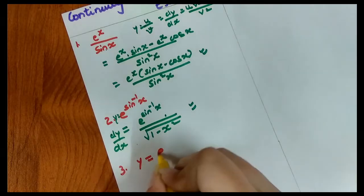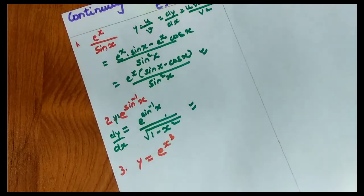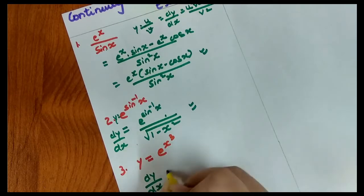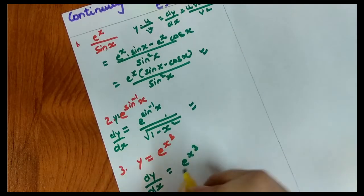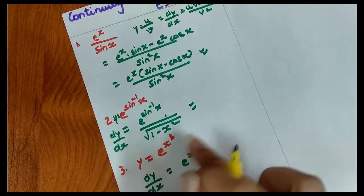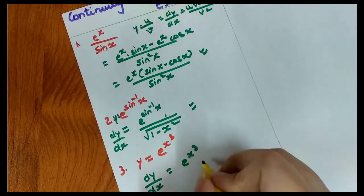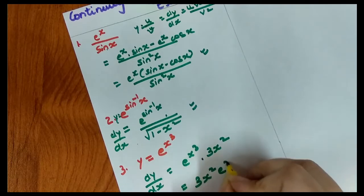The third part: y = e to the power x cube. Let's take this differentiation. So dy/dx = e^(x³) as it is, multiplied by the derivative of x³, which is 3x². So we write 3x² · e^(x³).